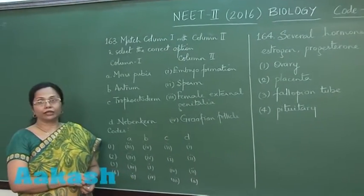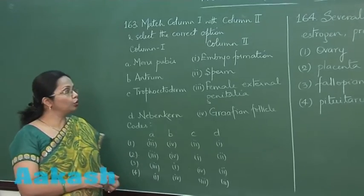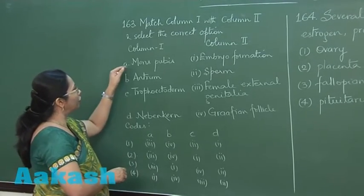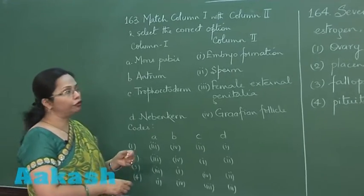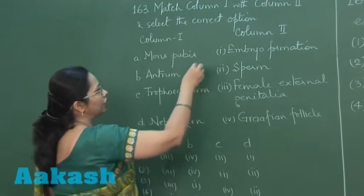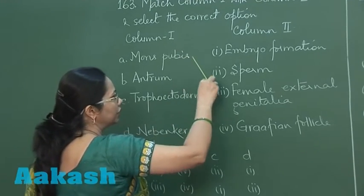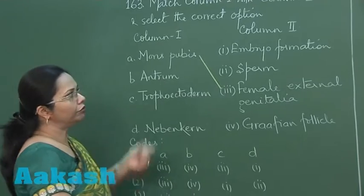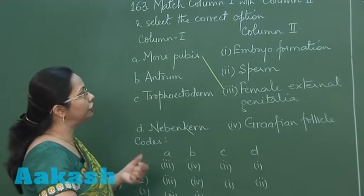Now in this question 163 we have to match these two columns. In column 1, mons pubis, also called mons veneris, is part of female external genitalia. Antrum is a fluid-filled space which we can see in the mature follicle.